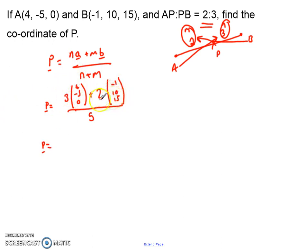So, 3 times this plus 2 times that, so 3 times 4, which is 12, plus 2 times negative 1, so that's 12 plus negative 2, that's 10. 3 times negative 5 is negative 15, plus 2 times 10, which is 20. Negative 15 plus 20, which is 5. 3 times 0 are 0, plus 2 times 15, that's then 30. So, that's me done the 3 times that plus 2 times this.